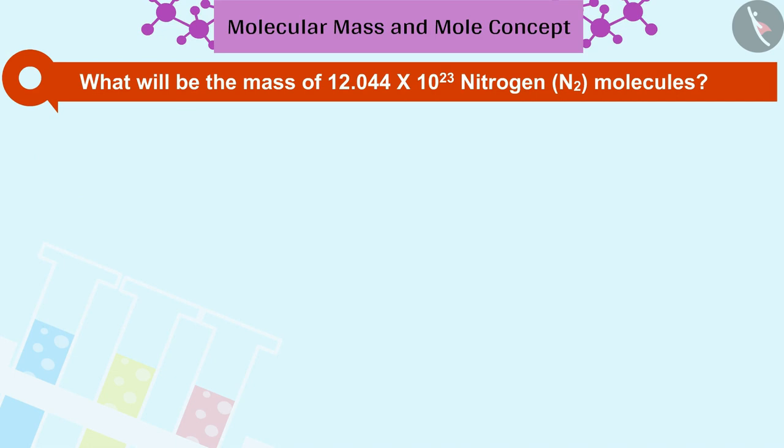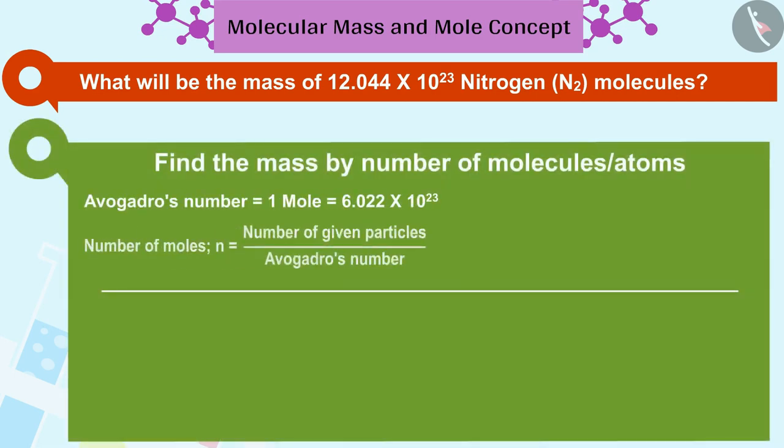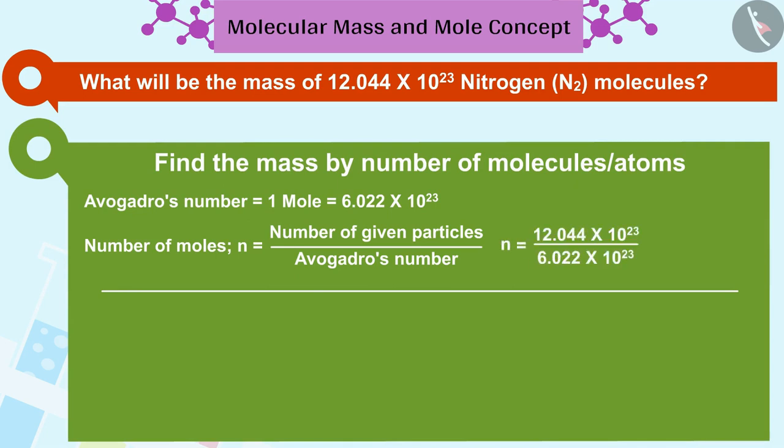To find this, first we will get the number of moles from the number of given particles. 12.044 into 10 raised to 23 nitrogen N2 molecules is equal to 2 moles of nitrogen gas.